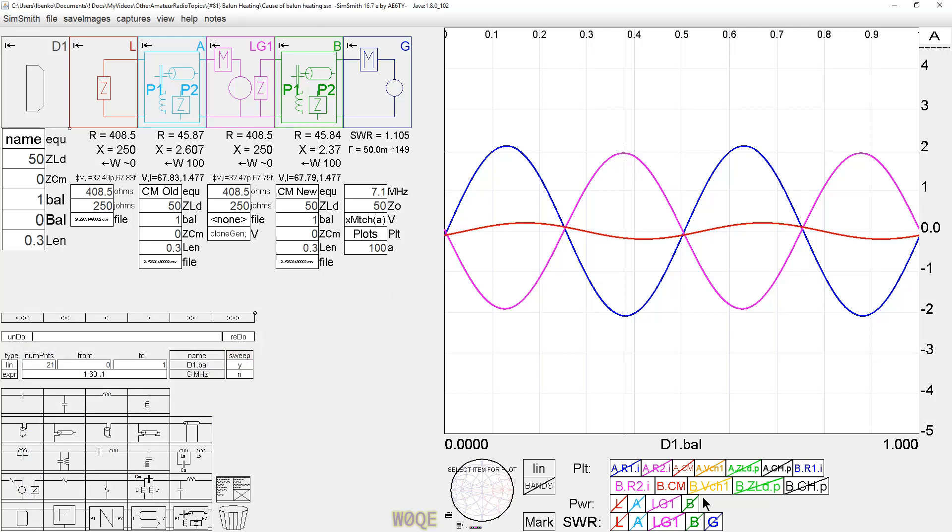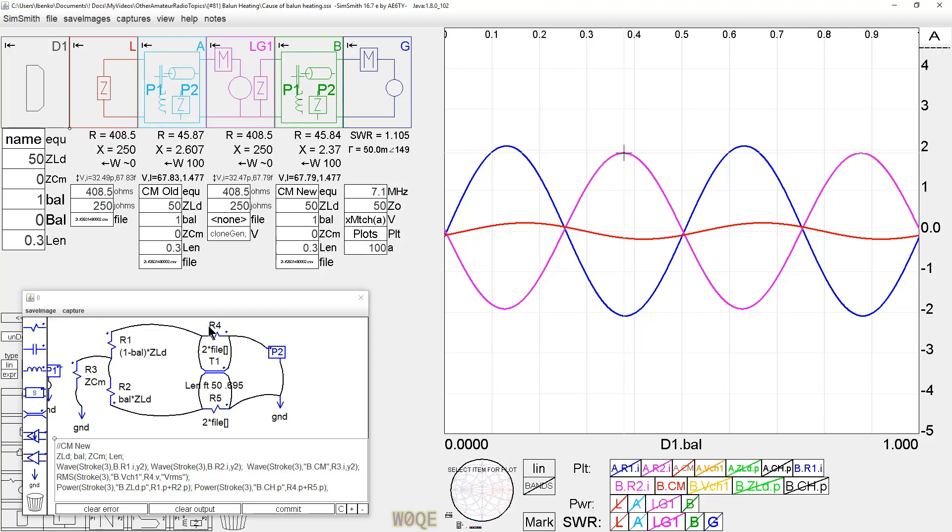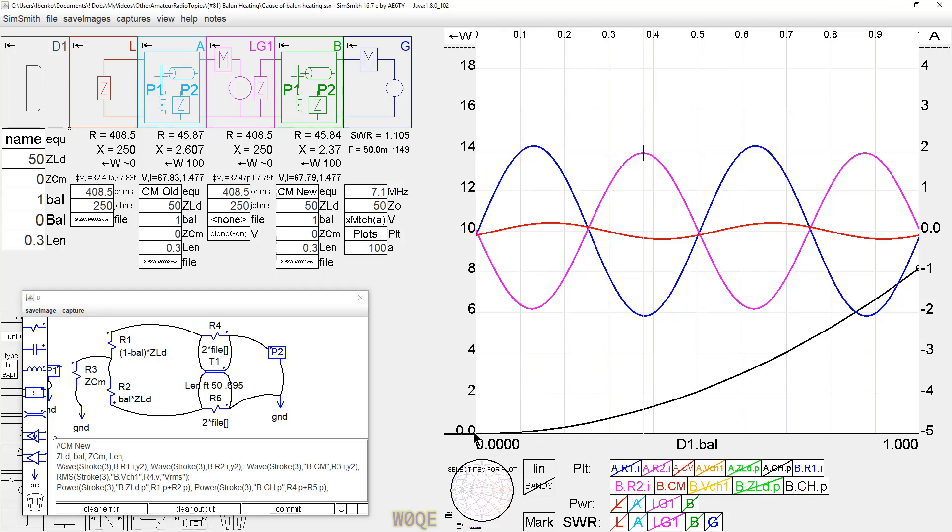So what we have is pretty much constant current going through here, constant differential current, but we do have a difference in common mode current. So let's see what that results in in terms of the calculations. So we're going to plot the power in these two resistors, R4 and R5. And that's done right here, the choke power.